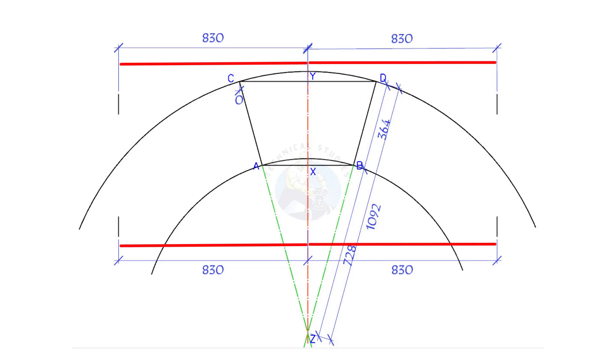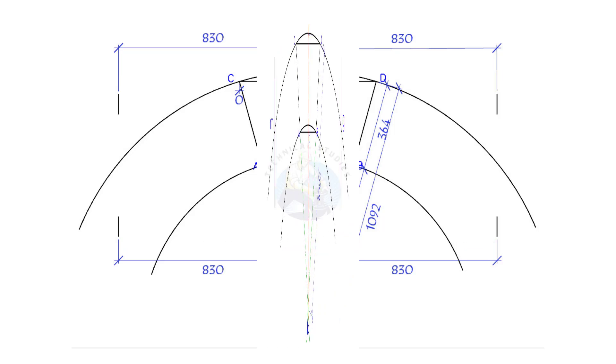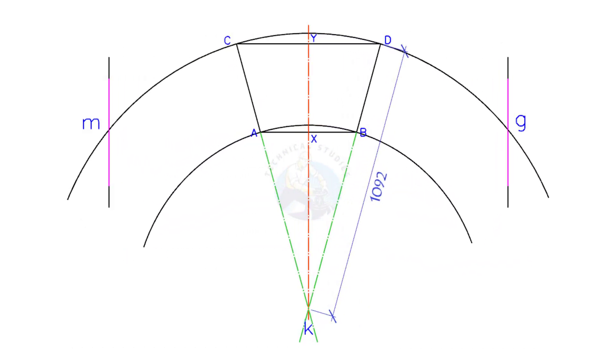Mark 830mm on both sides of the center line, as shown. Draw lines connecting the marks, intersecting the arc.